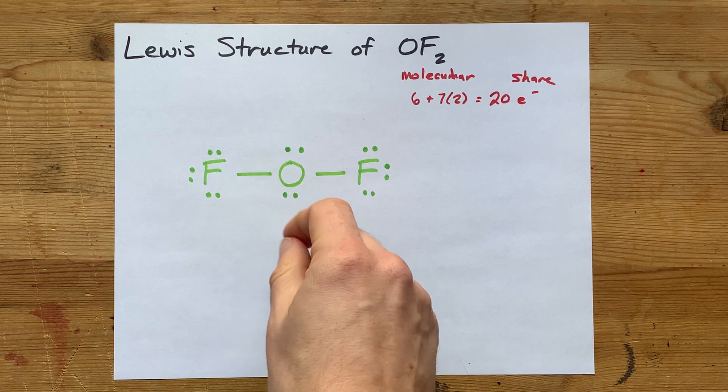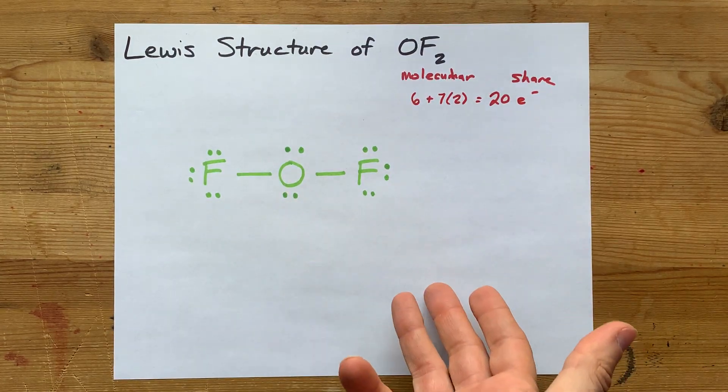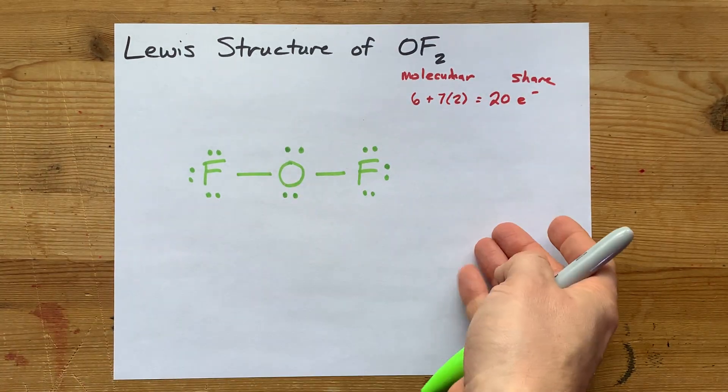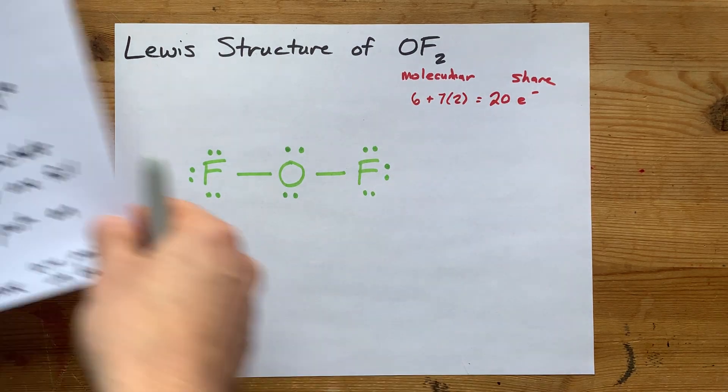But if it was short of electrons, we'd have to move lone pairs to form double, maybe even triple bonds, just to make sure the octet rule is satisfied. Well, there you go. There's the Lewis structure of oxygen difluoride. Congratulations. You did it.